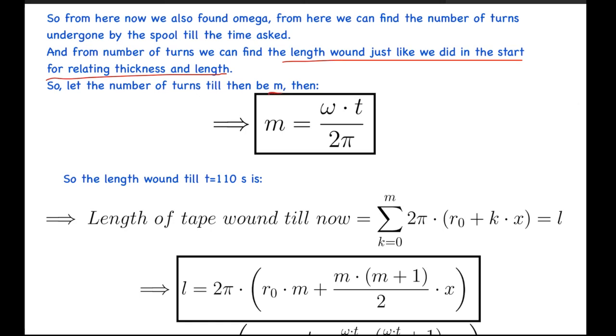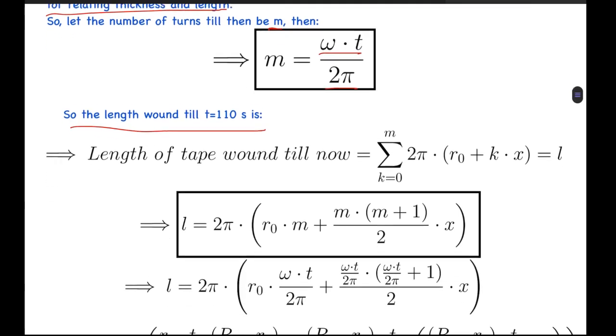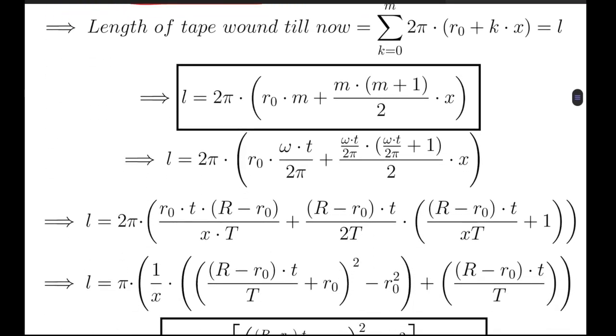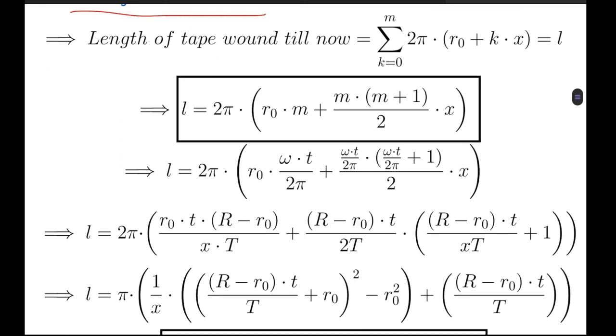From here, the number of turns, let's assume till now to be m. The number of turns will be omega·t, the total angle rotated, over 2π, the angle of one rotation. Now the length wound till t equals 110 seconds can be shown as: just like we did in the start of the problem, I have written 2π(r0 + k·x), this is the radius of the kth layer, and summing it from k equals 0 to m, we should get the value of l, which is the required answer.